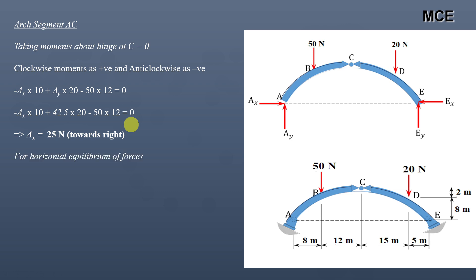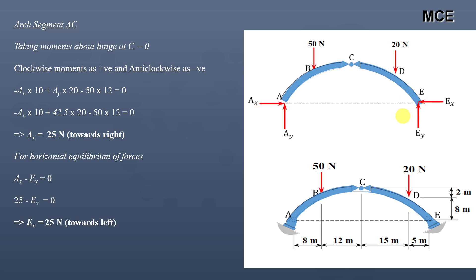To calculate the value of Ex, take the horizontal equilibrium of forces equal to zero. Only Ax and Ex are acting in the horizontal direction. Assuming forces to the right are positive and to the left are negative: Ax minus Ex equals zero. Putting the value of Ax equal to 25, you get Ex equal to 25 newtons, and it acts towards the left.